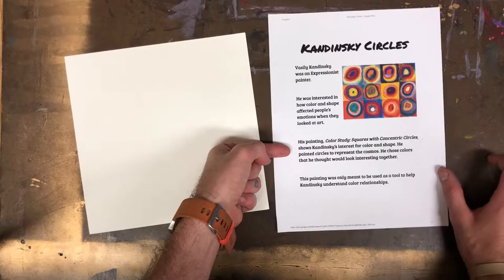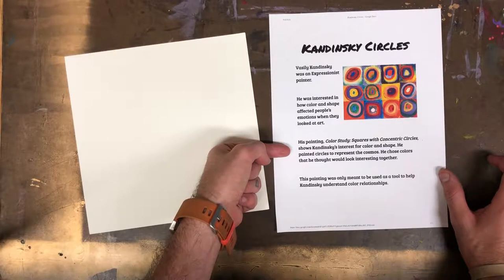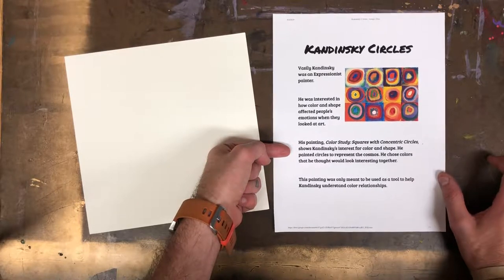His painting, Color Study, Squares with Concentric Circles, shows Kandinsky's interest for color and shape.